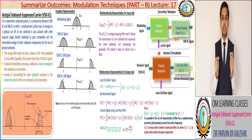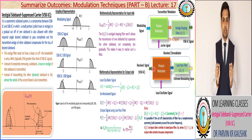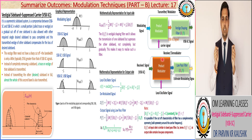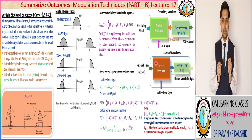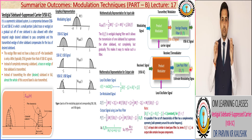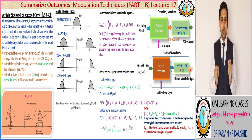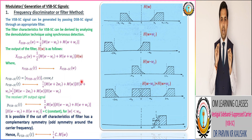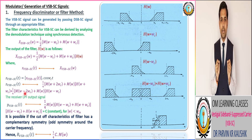This modulated signal is transmitted through the communication channel, and at the receiver you get this signal as the received signal. This received signal is then multiplied by a local oscillator signal by utilizing a synchronous detector, and after passing through a low-pass filter we get the signal equivalent to (1/4)[H(ω - ωc) + H(ω + ωc)] · M(ω).